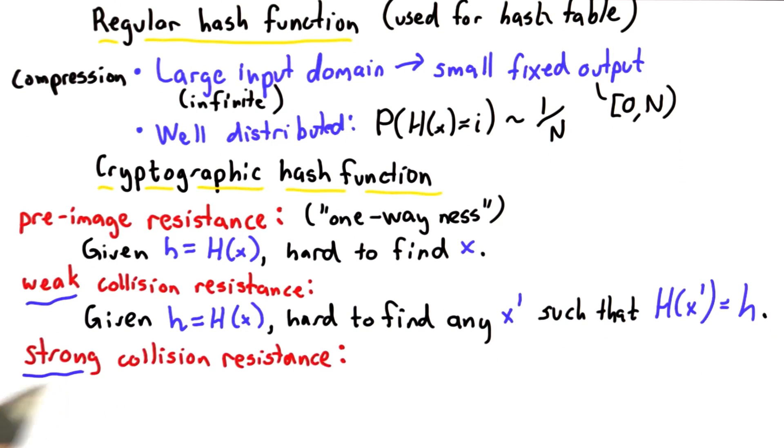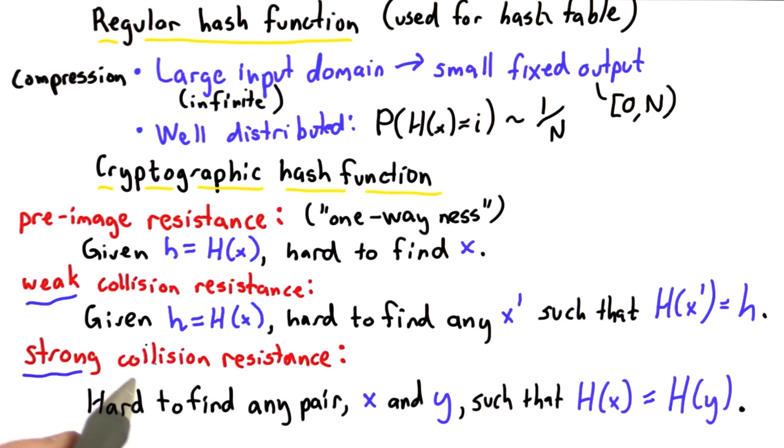And the final property is strong collision resistance, which is exactly the one we saw that we needed for the coin tossing game. And strong collision resistance requires that it's hard to find any pair, x and y, such that the hash of x is equal to the hash of y.